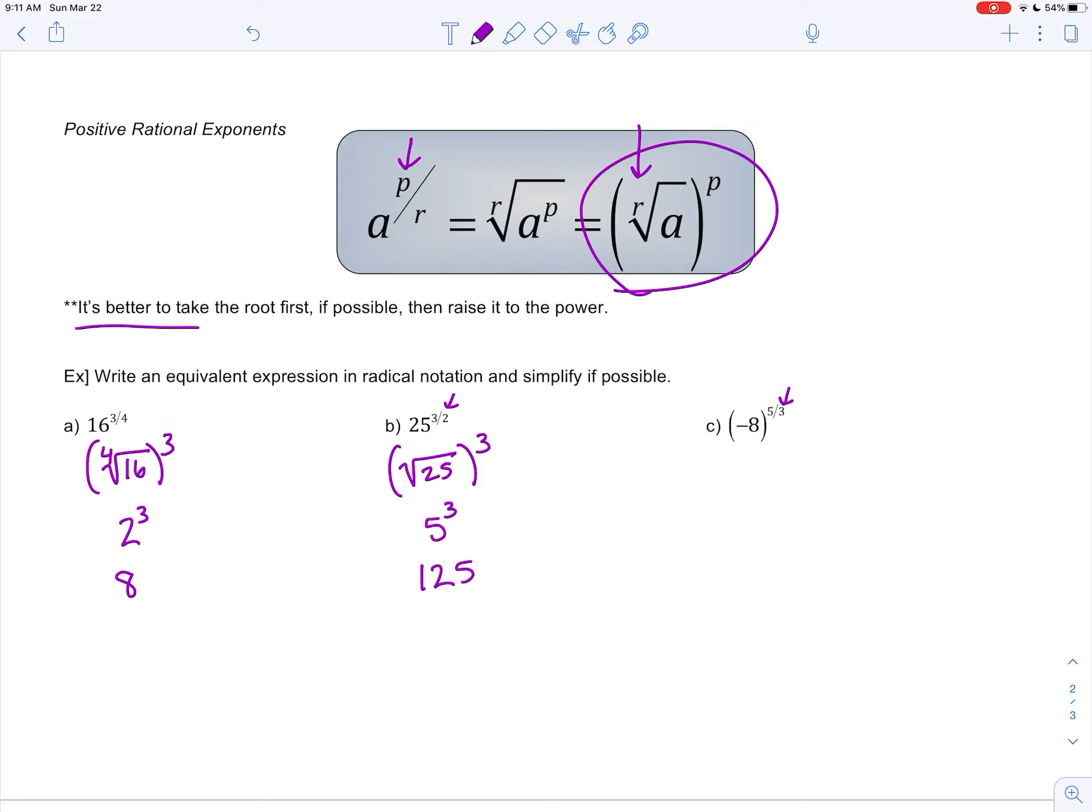Last one, negative 8 to the 5 thirds. This is the index. So cube root of negative 8 to the 5th power. So negative 2 to the 5th power, negative 32.